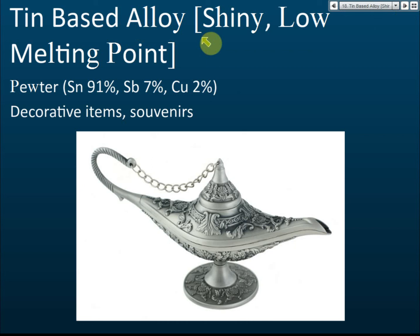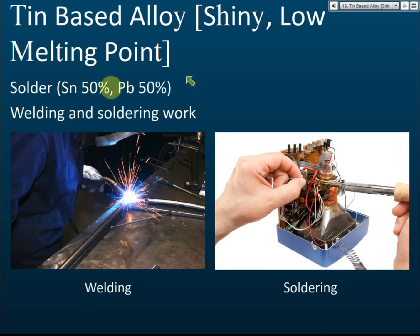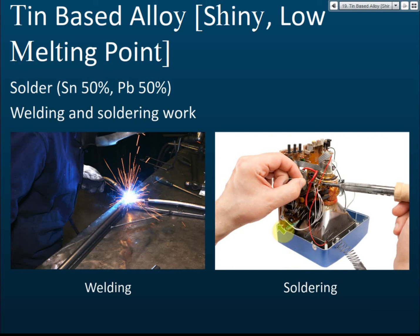Tin-base alloys are shiny and have a low melting point. Pewter contains tin, antimony, and copper, and is used to make decorative items and souvenirs. Solder contains tin and lead, and is used in welding and soldering because of its low melting point — that is why it melts easily and is suitable for those applications.